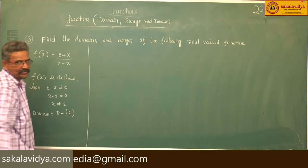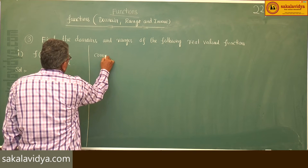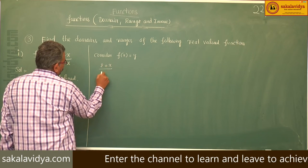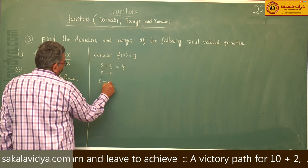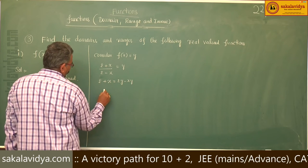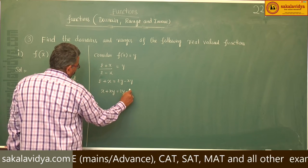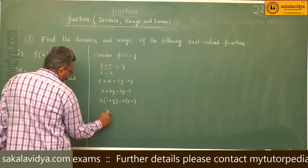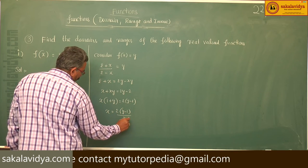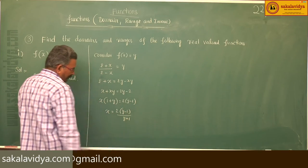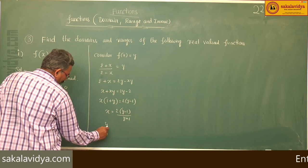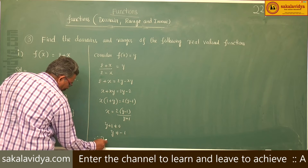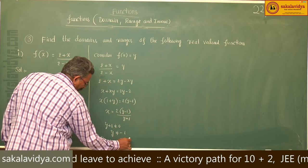Now to find the range, consider f of x equal to y. That means (2 plus x) by (2 minus x) equals y. By cross multiplication, 2 plus x equals 2y minus xy. So x plus xy equals 2y minus 2, x(1 plus y) equals 2(y minus 1), therefore x equals 2(y minus 1) by (y plus 1). For x to be a real number, y plus 1 must not equal 0, so y does not equal minus 1. Therefore, range is equal to R minus {-1}.